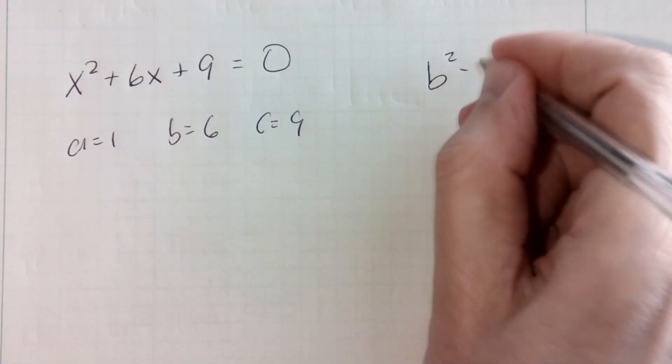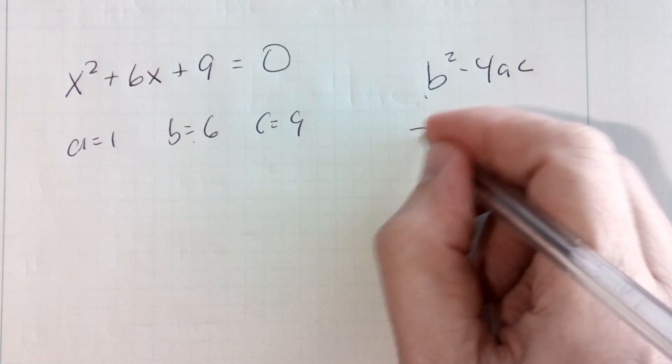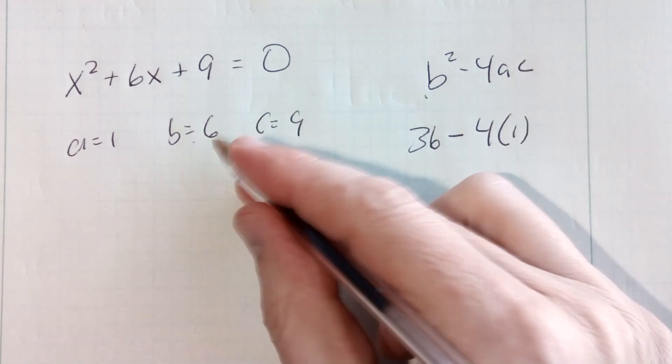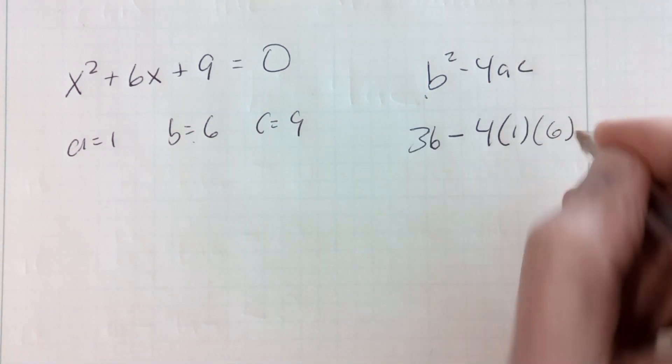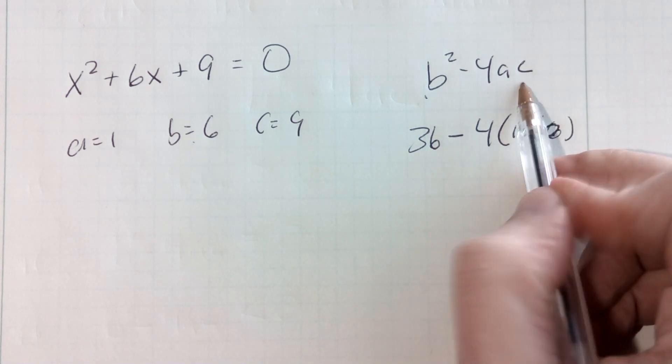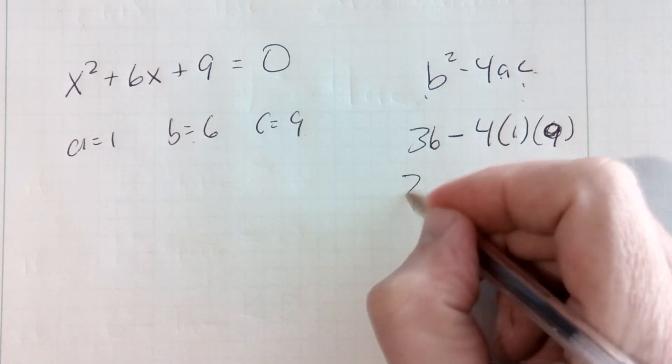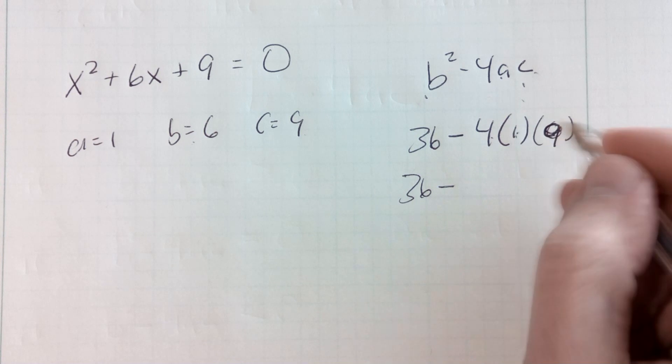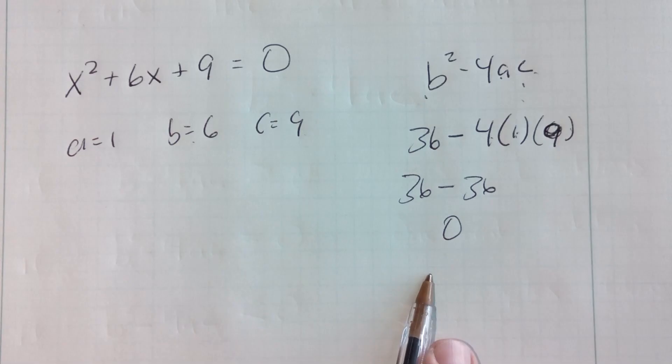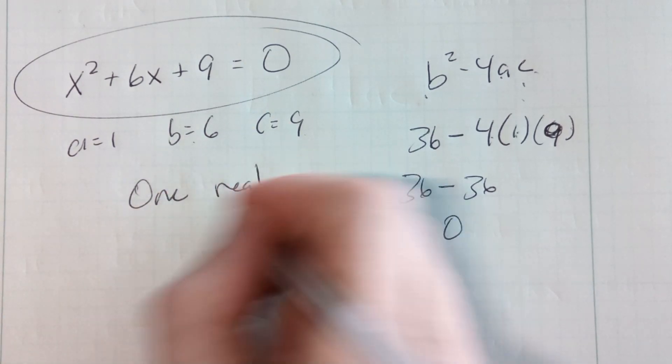b-squared minus 4ac. b-squared is 36 minus 4 times a, a is 1, c is 9, so I get 36 minus, 4 times 1 times 9 is 36, 36 minus 36 is 0. Since I get 0, this quadratic has one real solution.